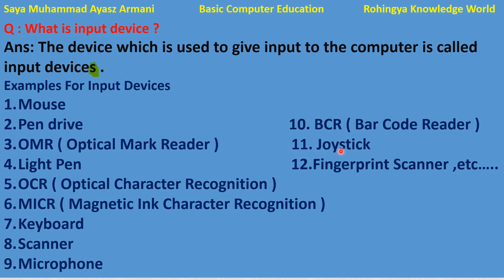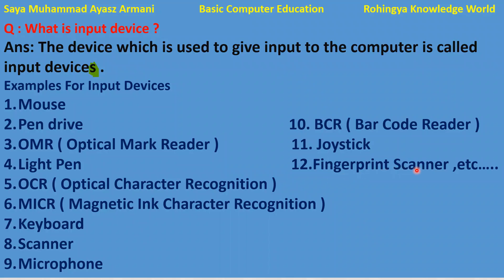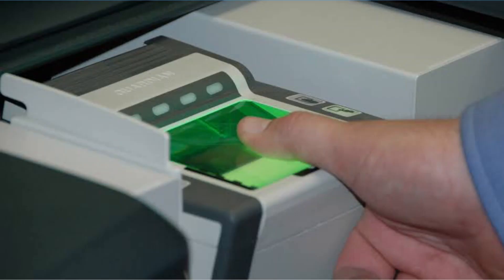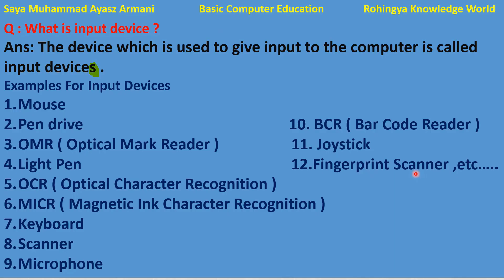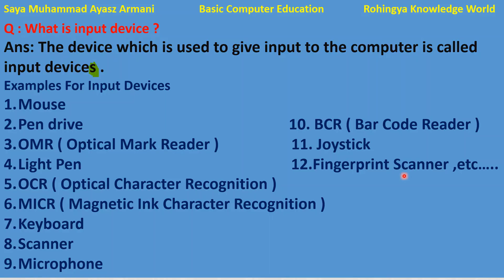Another input device is the joystick, which is used to play video games. There is also the fingerprint scanner. The fingerprint scanner scans your fingerprint. It is used as a password or security measure — instead of a regular password, you use your fingerprint to access the device.